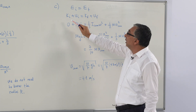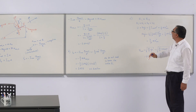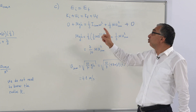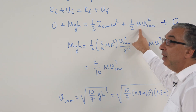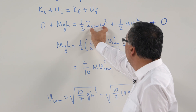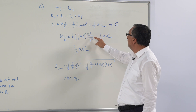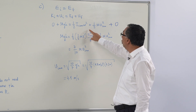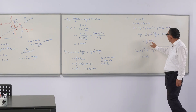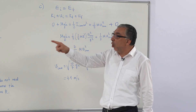Initial kinetic energy is zero (starts from rest), and initial potential energy is mgh. At the bottom, potential energy is zero and kinetic energy has two terms: one for rotational motion and one for translational motion. Using the relation ω = v/r and substituting the rotational inertia, we get a simple expression for v. The velocity of the ball at the bottom of the incline is 4.1 meters per second.